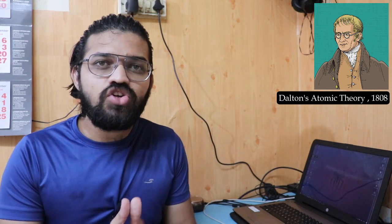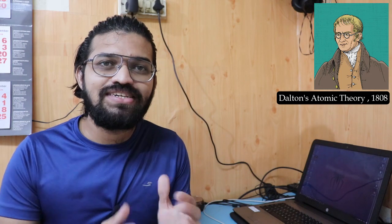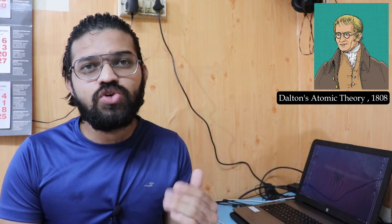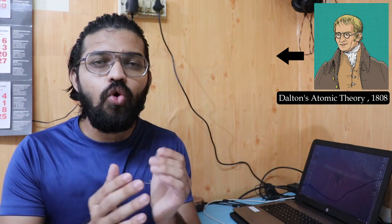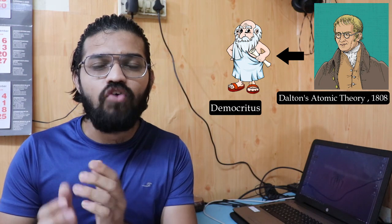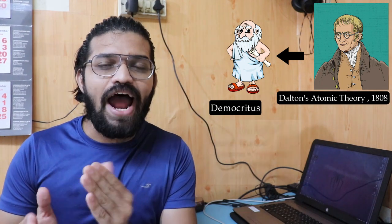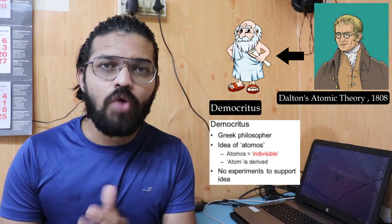In 1808, Sir John Dalton postulated six points and named them Dalton's Atomic Theory. Sir John Dalton was an English chemist, scientist, and meteorologist. He referred to the old idea of Democritus — a 2,000-year-old idea called 'atomos,' meaning the smallest particles that cannot be further divided.